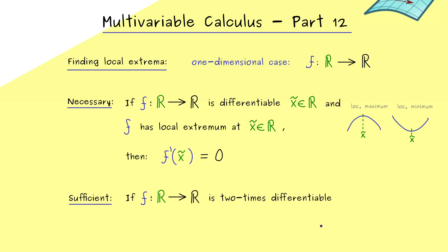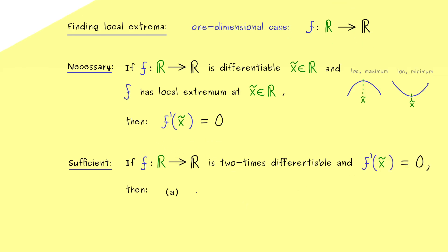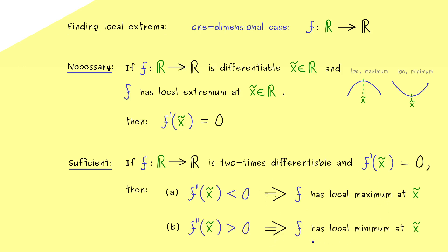Assume the function f is two times differentiable everywhere. We still need the necessary condition — the first derivative must vanish. Then we have two cases with the second derivative at x-tilde: if the second derivative is less than zero, we find a local maximum; if the second derivative is positive, we find a local minimum. So this is what we know from the one-dimensional case.